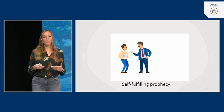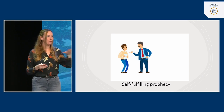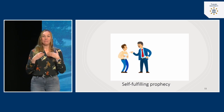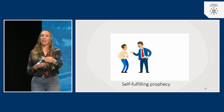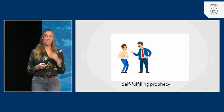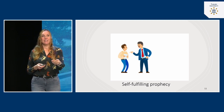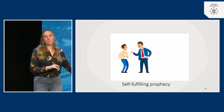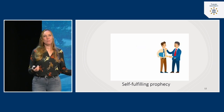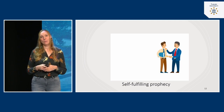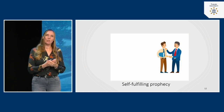All these initial ideas we have about people set our perception in motion — we look for information in line with those ideas, and they also impact our behavior. We actually behave in ways that make it more likely for our initial ideas to be confirmed. This is the self-fulfilling prophecy: our expectations trigger behavior. If you had never heard the gossip and been fully open-minded, you might have had an entirely different — cooperative and productive — relationship with that boss.